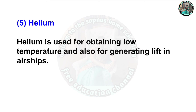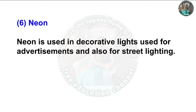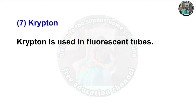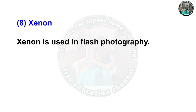Helium is used for obtaining low temperatures and for generating lift in airships. Neon is used in decorative lights for advertisements and street lighting. Krypton is used in fluorescent tubes. Xenon is used in flash photography.